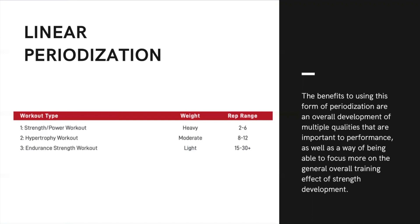The benefit of using this form of periodization is an overall development of multiple qualities important to performance, as well as a way of focusing on general overall training effects of strength development. Especially in strength-based sports like powerlifting and weightlifting, lots of people still use linear periodization — training four weeks focused on heavy weights and low reps, then four weeks of hypertrophy with moderate weight and 8–12 reps, and so on.